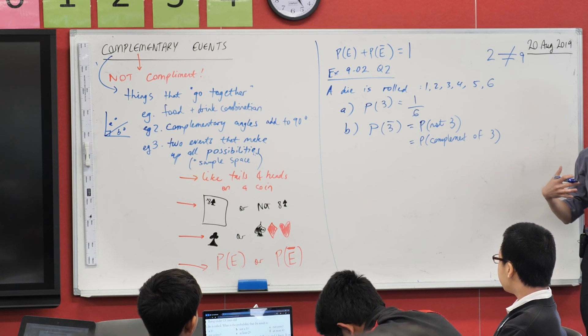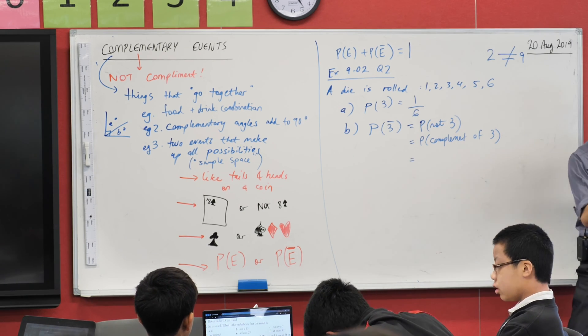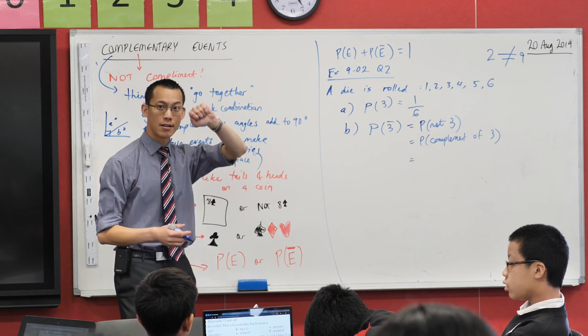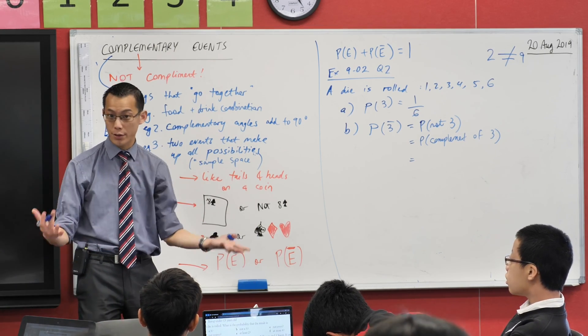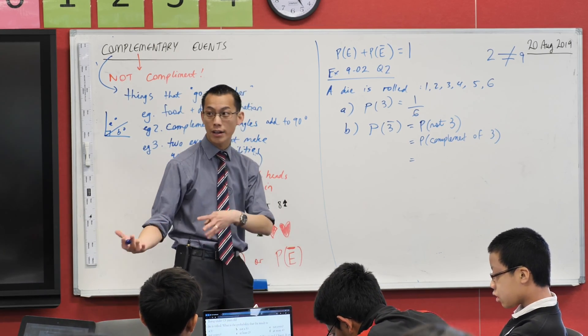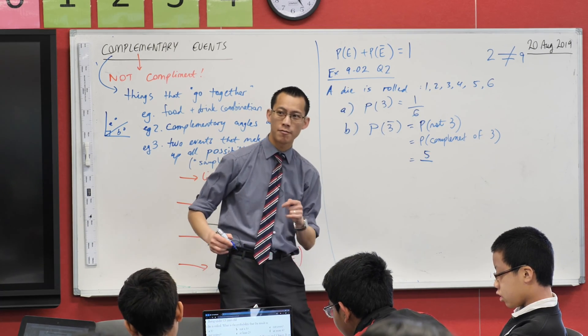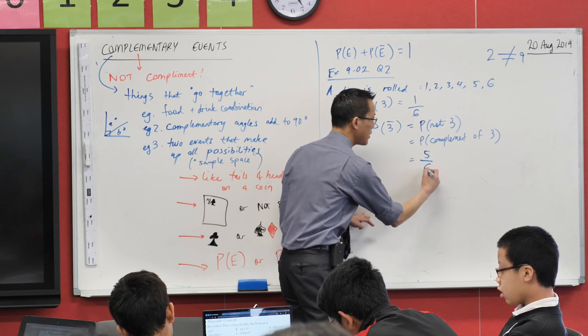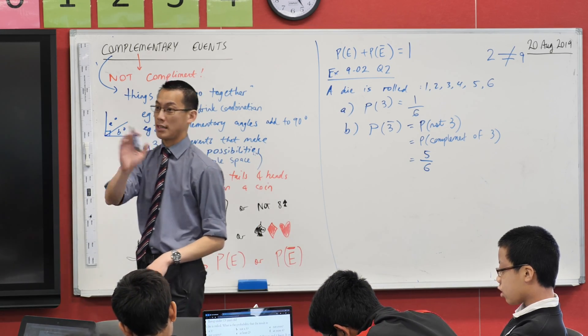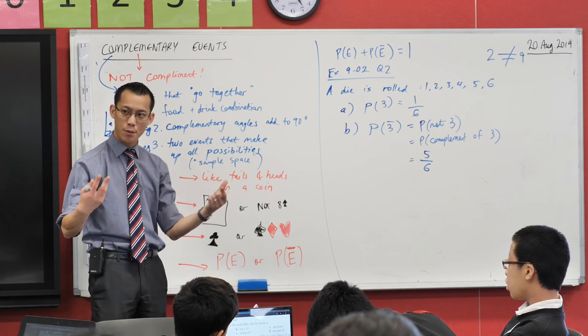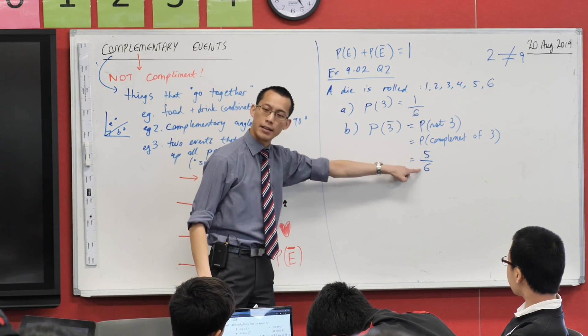I'm interested in all of the other things. Now, what are all the other things? If it's not three, then it can be one, two, four, five, or six. So how many of those are okay? Five of them. And then what's the size of my sample space again? Six. So what we did was we counted up how many different things could happen and were favorable, and then we said, okay, we'll divide that by the sample space.